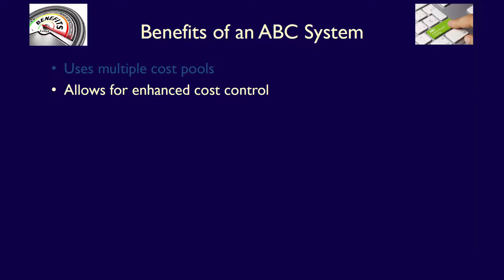When implementing an activity-based costing system, management must identify the cost pools. During this process, management increases their awareness of each activity performed during production.